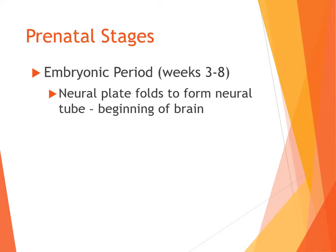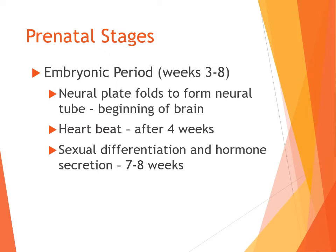Continuing with the embryonic period: the neural plate folds — a flat plate of neurons curves in on itself to form a tube — and this is the beginning of the brain stem, the start of the brain. Heart rate is detectable after four weeks, and sexual differentiation and hormone secretion happens between about seven to eight weeks, when you can begin to detect differences in biological sex.